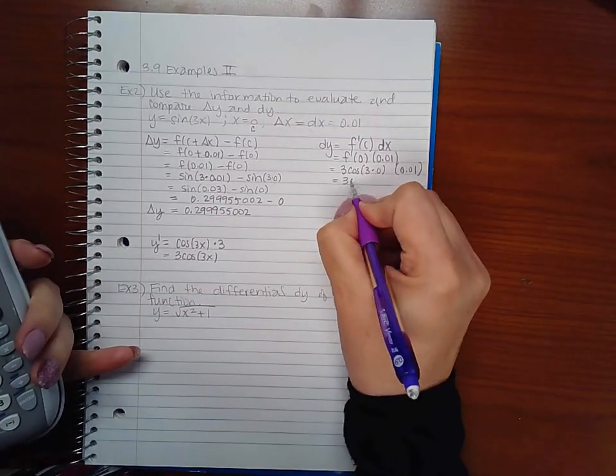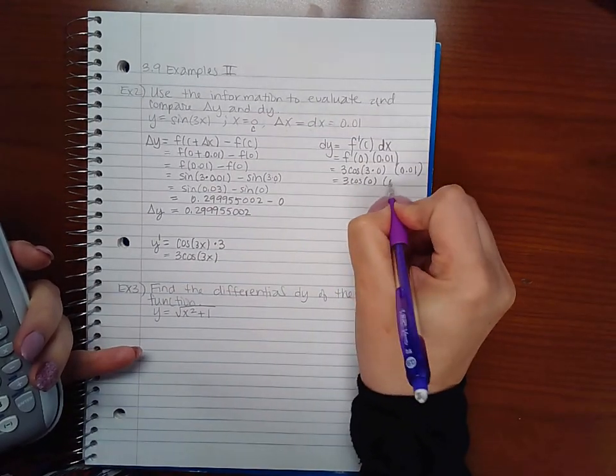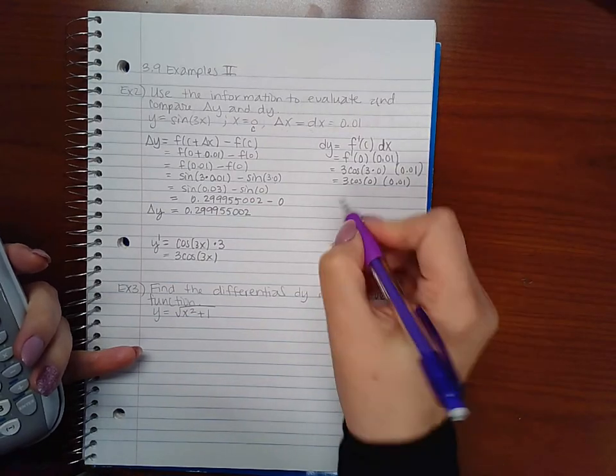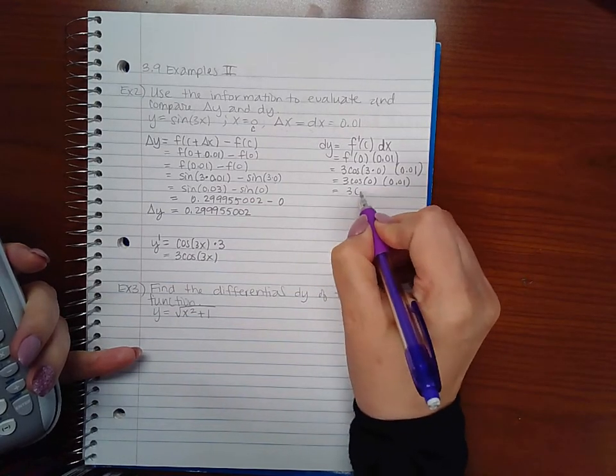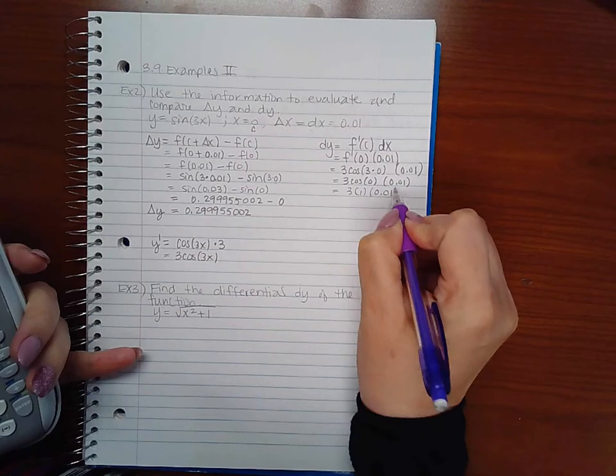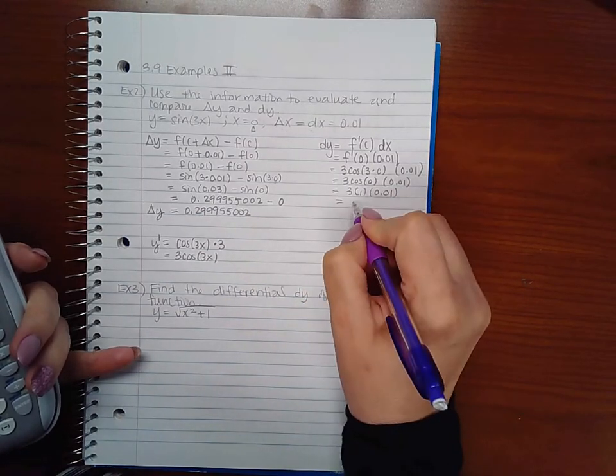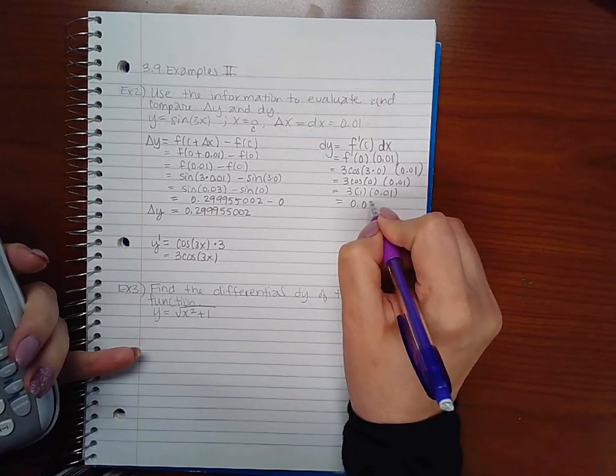Or 3 times cosine of 0 times 0.01. The cosine of 0 is 1. And if I multiply all of those together I get 0.03.